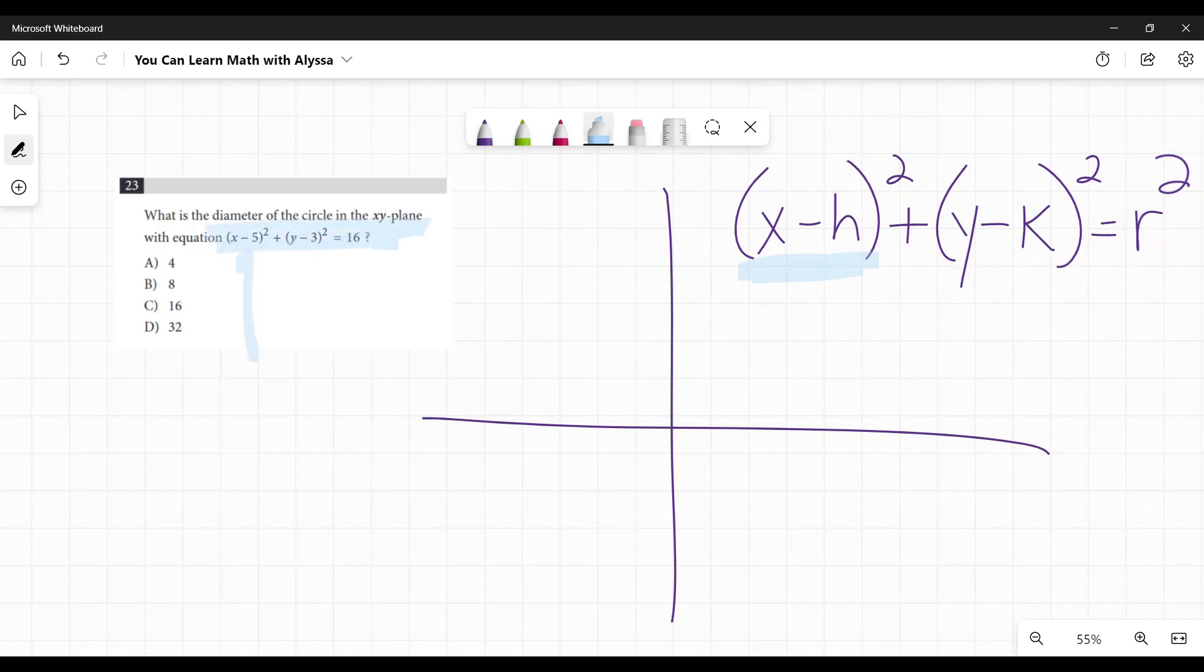You can see there's the x minus a number, y minus a number, and you have the plain number on the side. You don't have to change anything. You just have to have this knowledge that this is the standard equation of a circle and that this number that's by itself, in this case 16, is the radius squared.